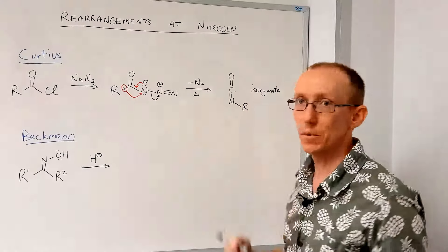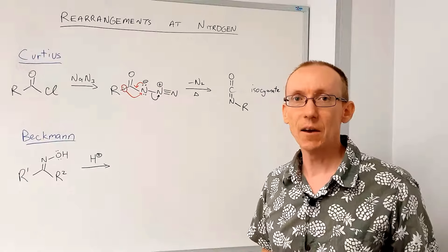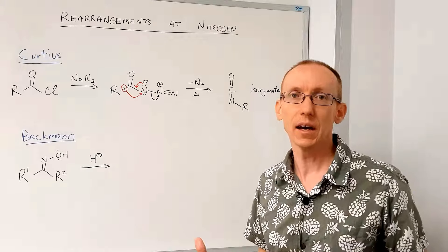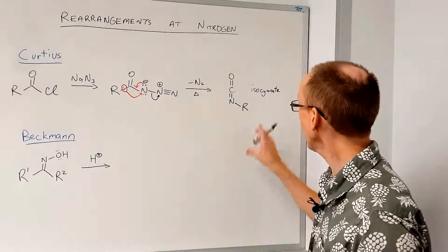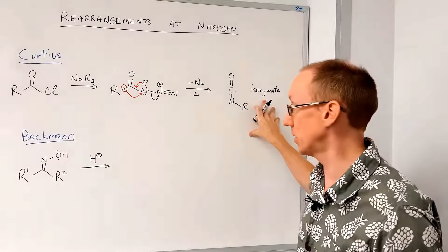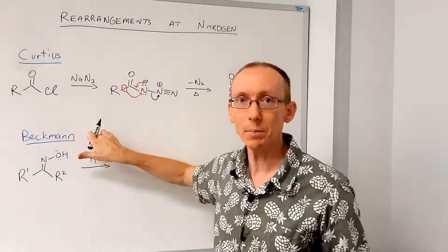You can also react them with things like amines to make ureas and with alcohols to make carbonates. Okay, but we'll leave it at the isocyanate. So we can move on to the Beckman rearrangement.